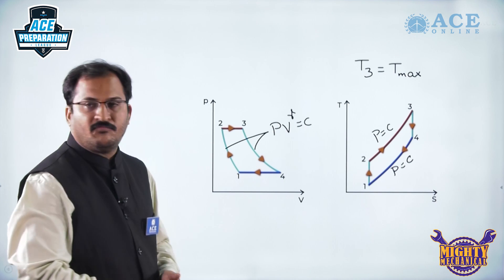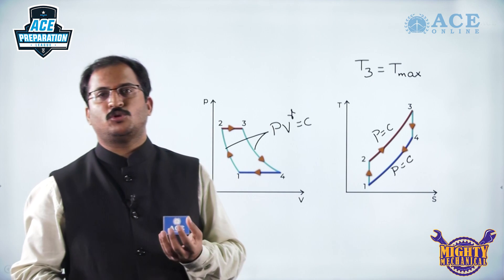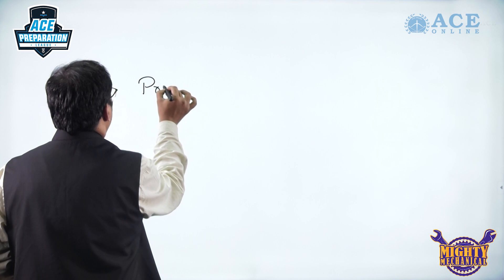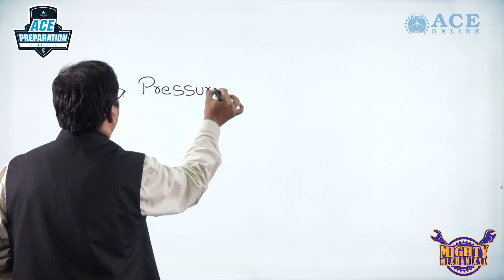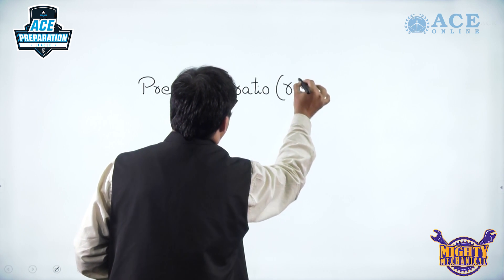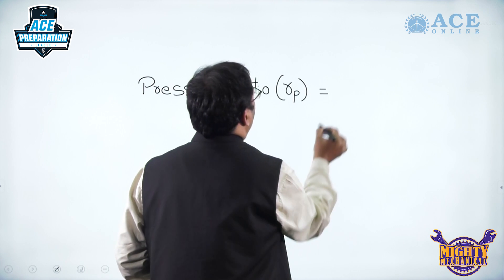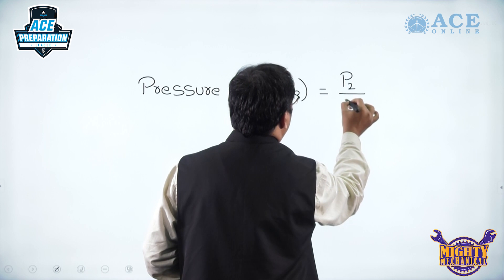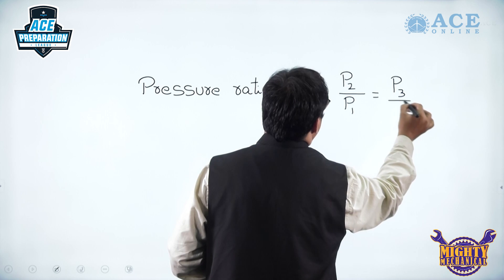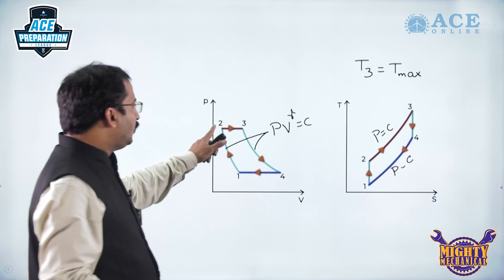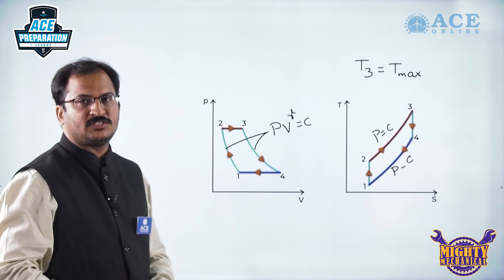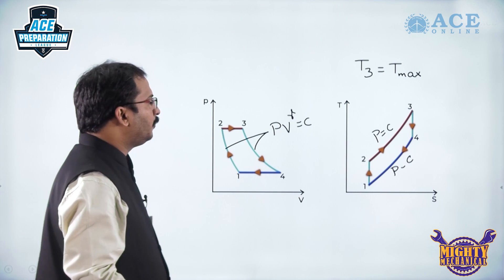Now we will come across one important ratio, that is the pressure ratio, denoted by R_P. This will be maximum pressure by minimum pressure, so P2 by P1, which is also equal to P3 by P4. This is because process 2 to 3 is a constant pressure process so P2 equals P3, and process 4 to 1 is also a constant pressure process so P4 equals P1.